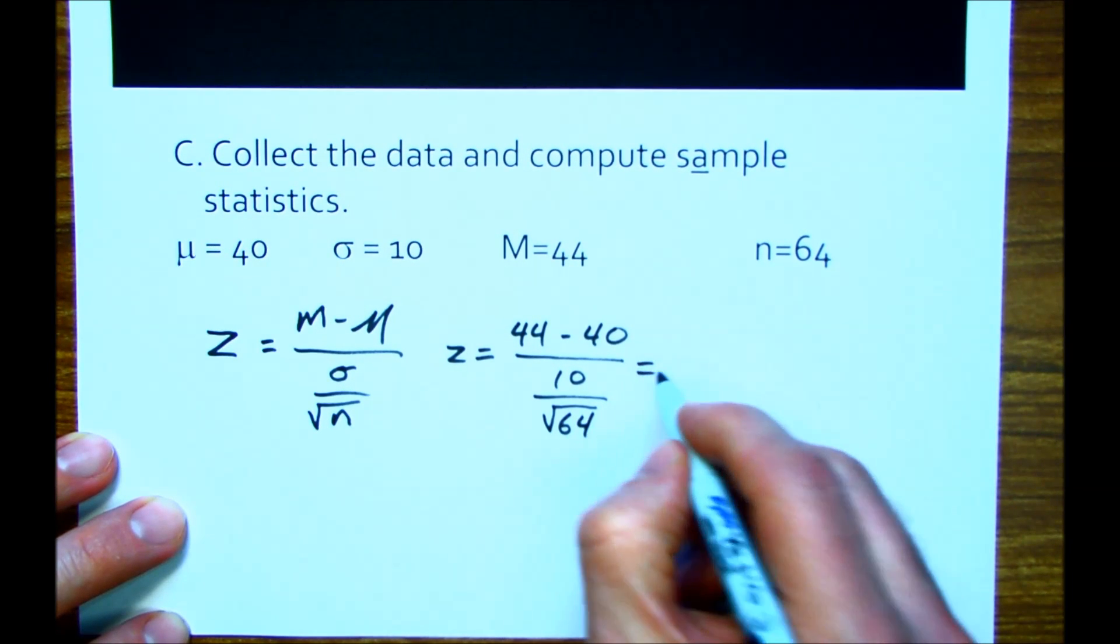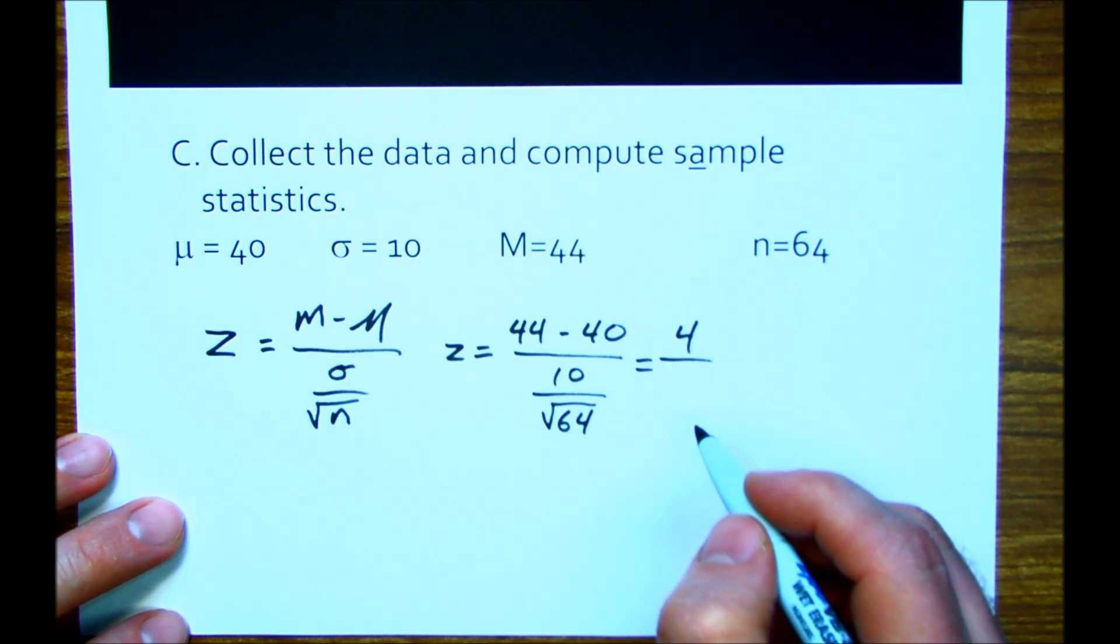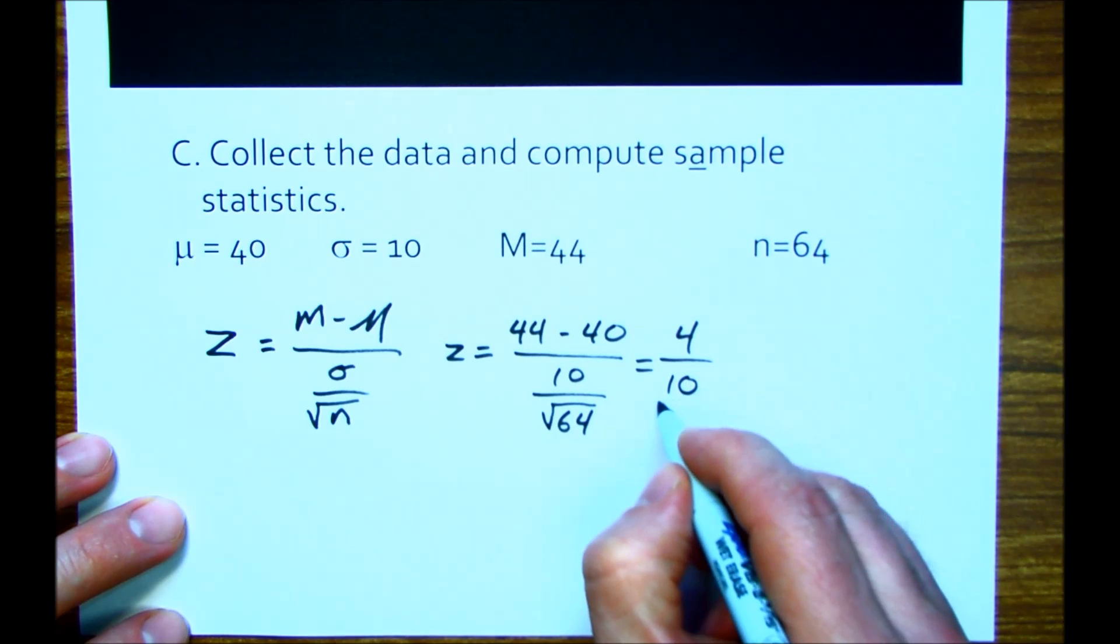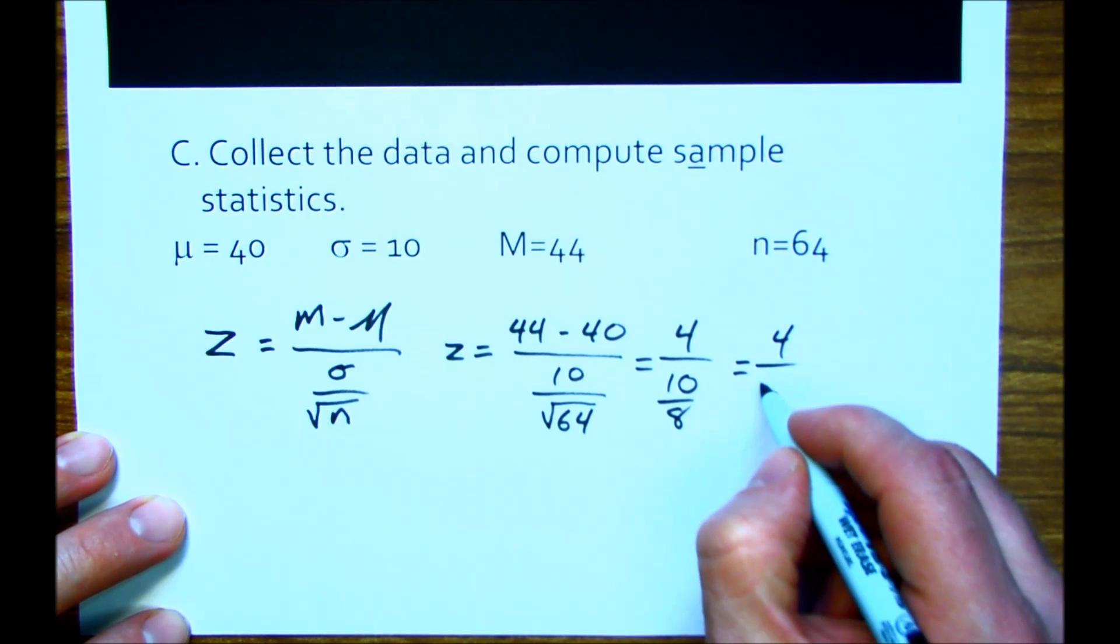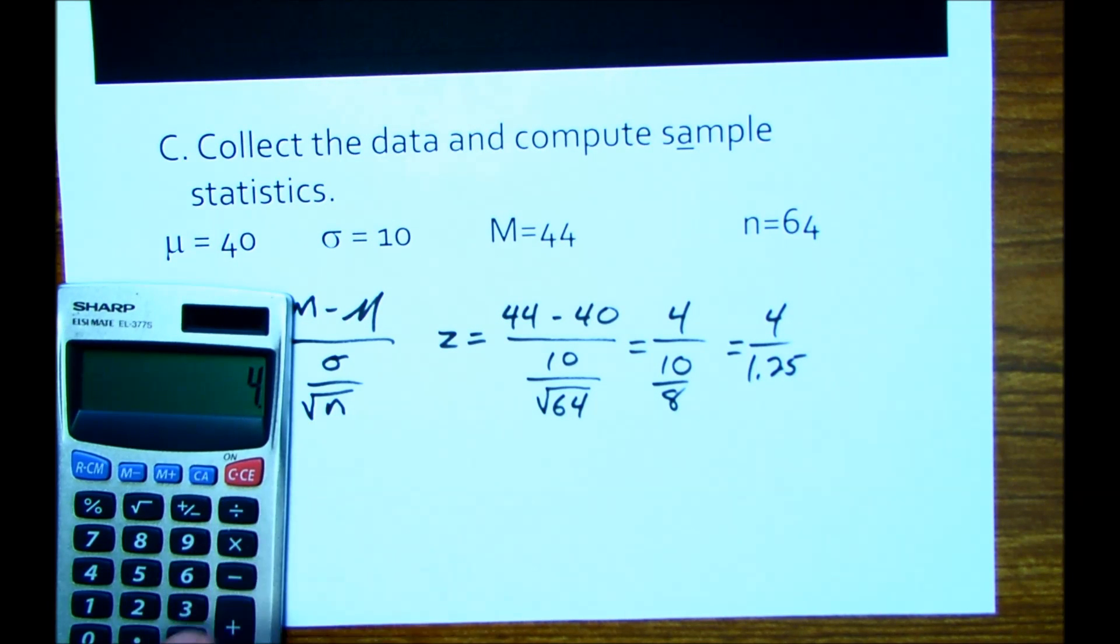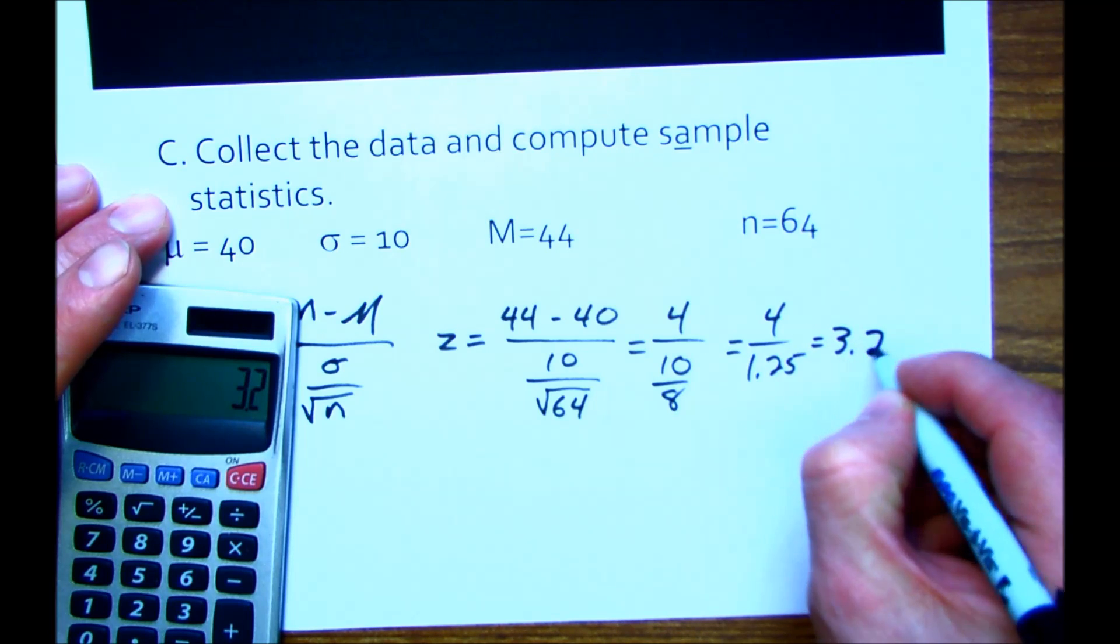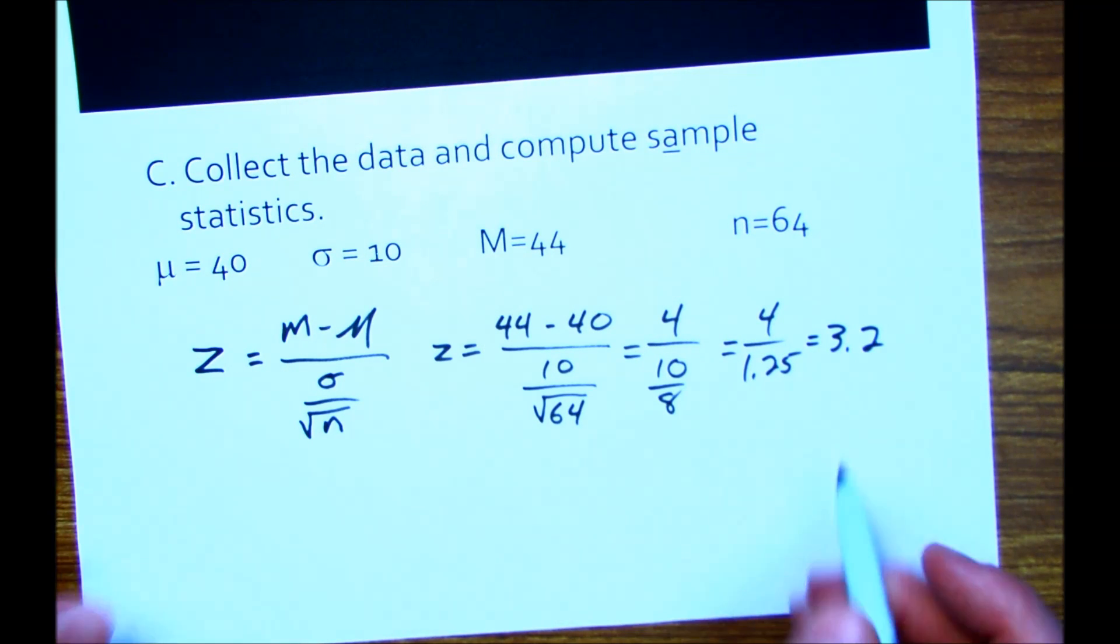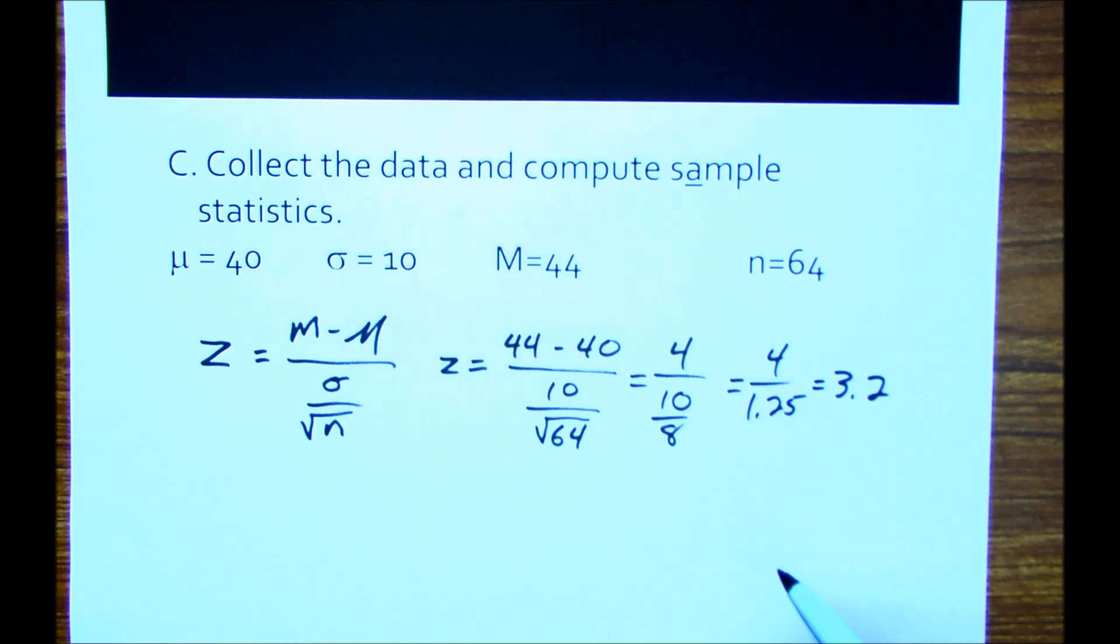The alternative hypothesis, the H sub one, treatment has an effect. So we have a null hypothesis, alternative hypothesis. So in our example here, for our research question, our null hypothesis might be that the students who get the phonics instruction, that that mean equals the population mean. And our alternative hypothesis, that the mean of the phonics does not equal the population mean. So that's our first step. We state our hypotheses and we have our null and alternative hypotheses.